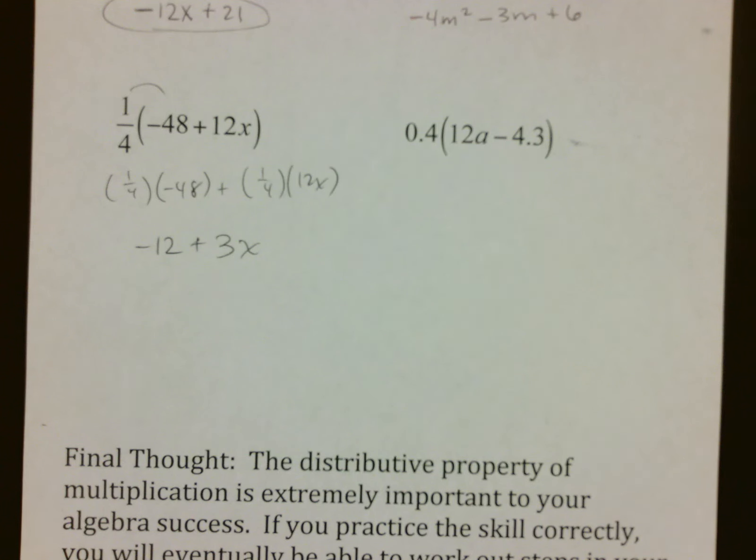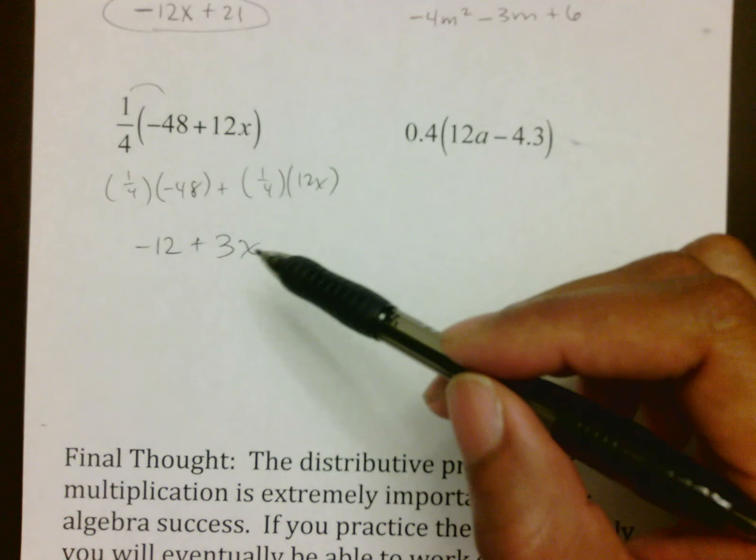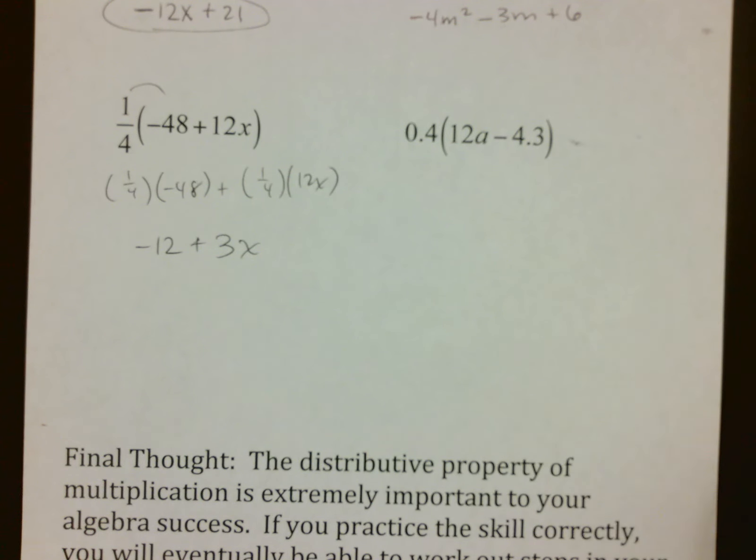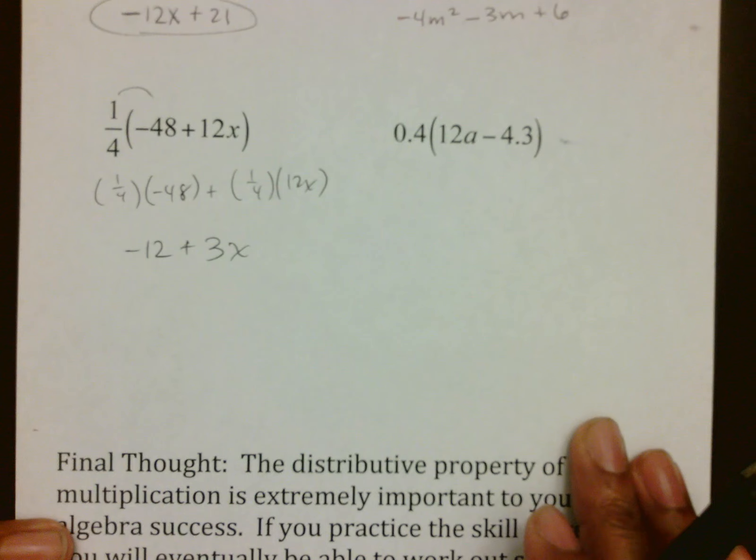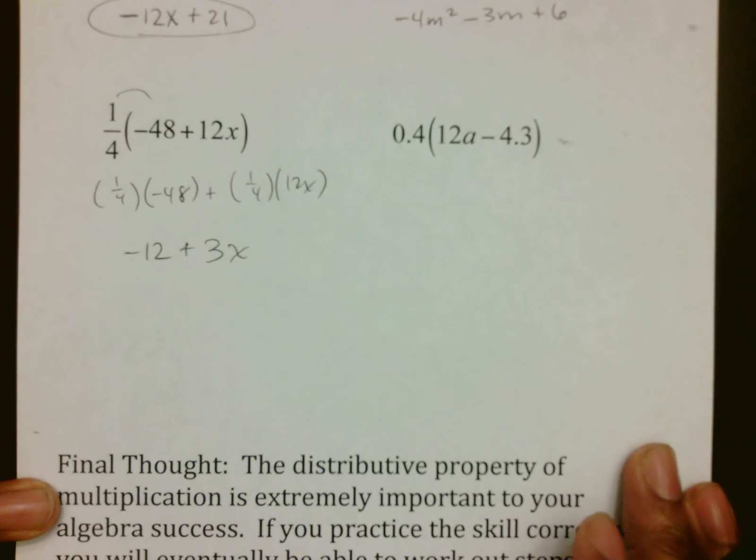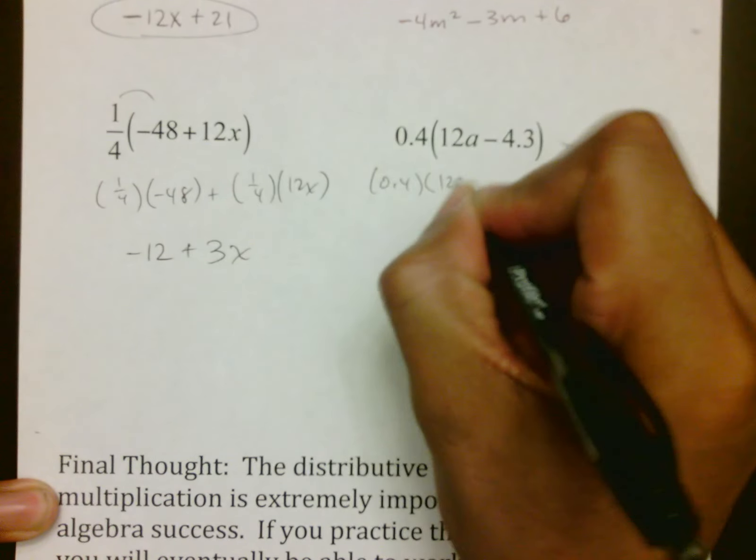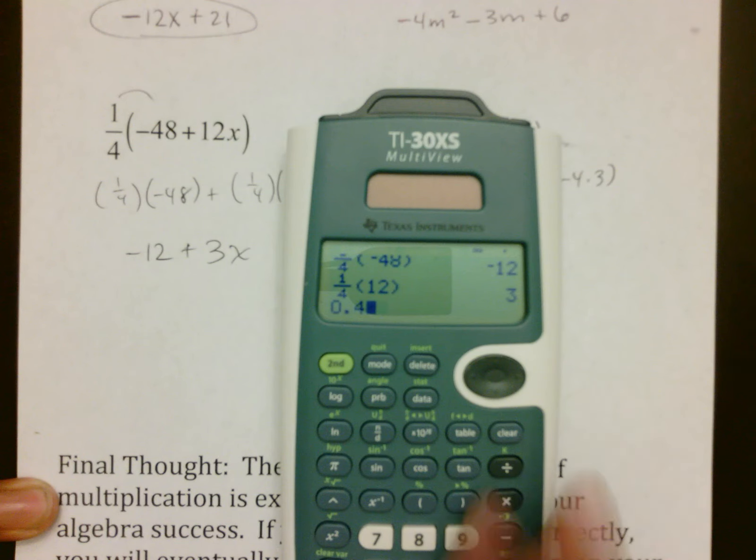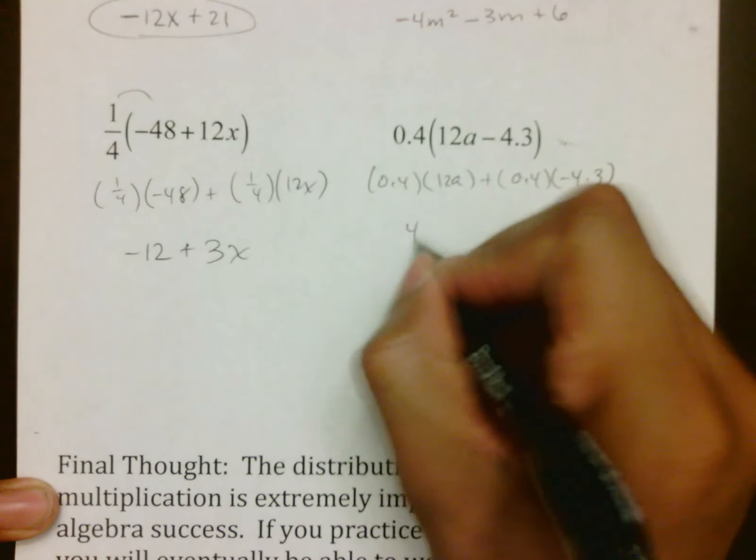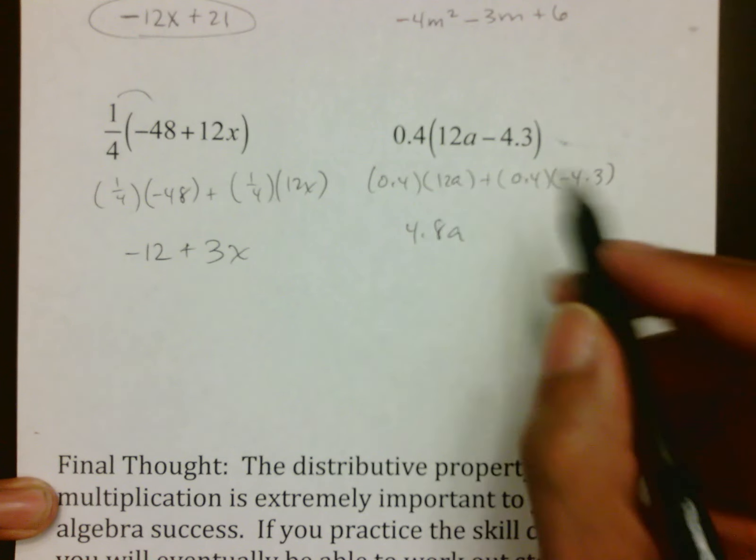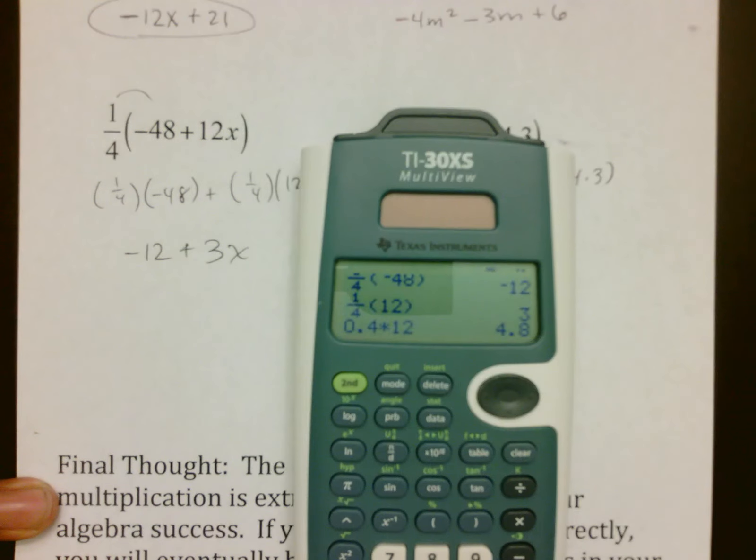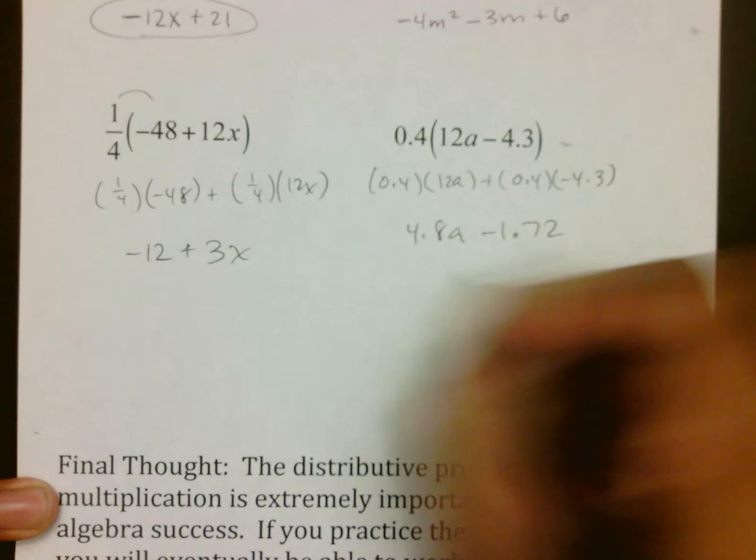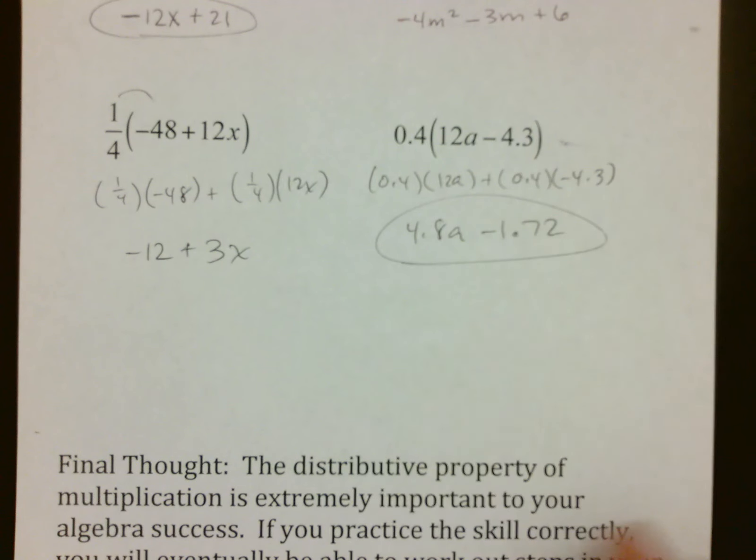The trick with the fractions and the decimals is that you get so caught up worrying about what the fraction is doing, that you forget to put an x on there, and then you get messed up. So don't forget, while you are finding out what the answer is to your multiplication, that you need to make sure you are also thinking about the variable, the negative, and all the other stuff that's going on. On this last one, 0.4 meets 12a, and 0.4 meets negative 4.3. So we do 0.4 times 12, which gives me 4.8a. And here's the part you've got to be careful on. 0.4 meets negative 4.3, so 0.4 times negative 4.3, which gives us negative 1.72. And that is your stopping point. You cannot put a term with a variable together with a term that does not have a variable.